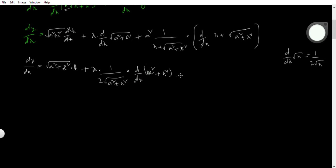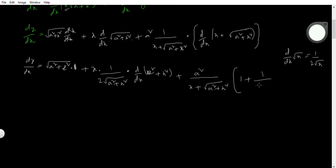It's clear. Now coming to the second part: plus a² into 1 divided by (x + root over a² + x²), into d/dx of that expression. x derivative is 1, plus the root's derivative is 1 by 2 root over a² + x², and inside d/dx of a² + x².